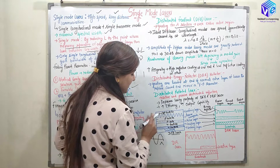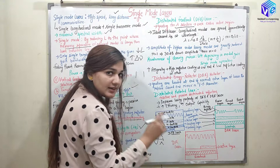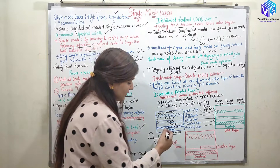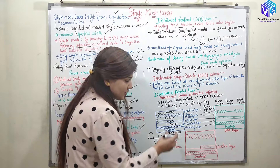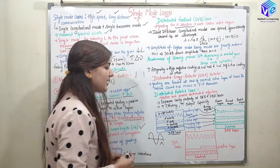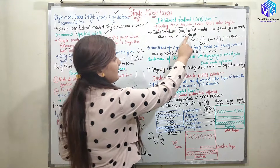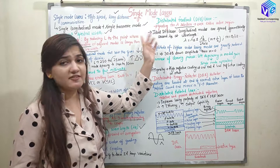In the DFB laser, the grating is present from one end to the other across the full active region. At the bottom we have a substrate, over which is the N-type Gallium Aluminium Arsenide confining layer, then the N-type GaAlAs guiding layer, the Gallium Arsenide active layer, the P-type GaAlAs passive waveguide, and finally the P-type GaAlAs confining layer on top.